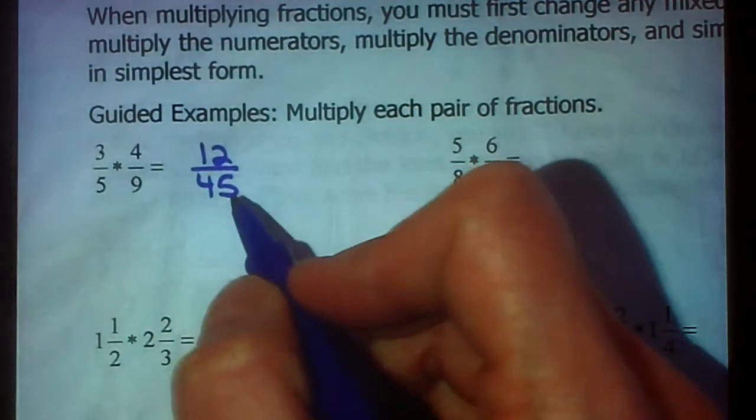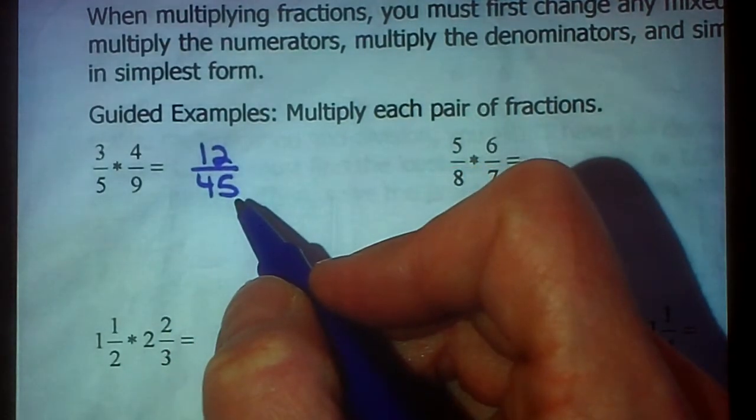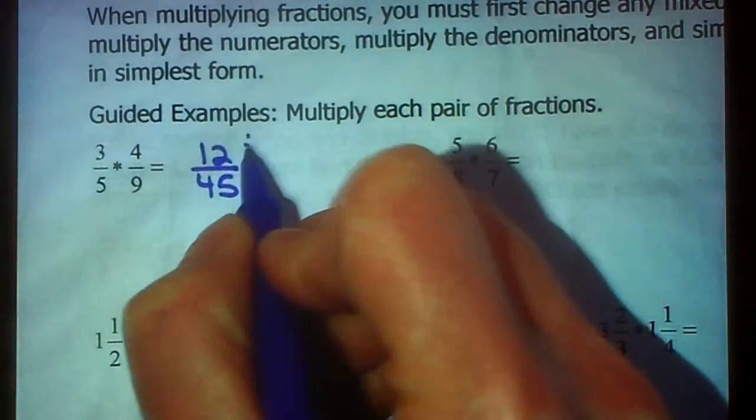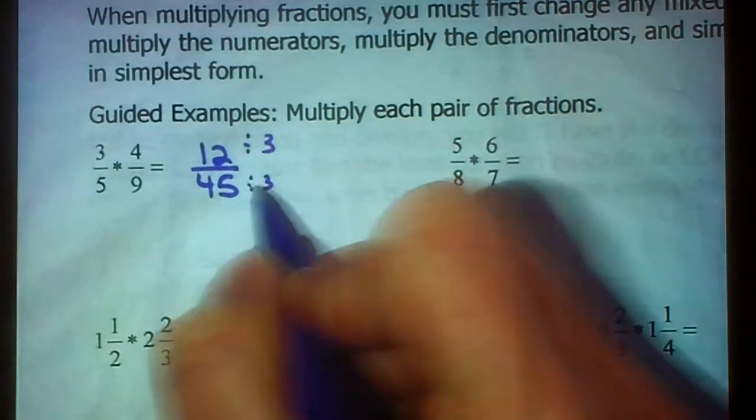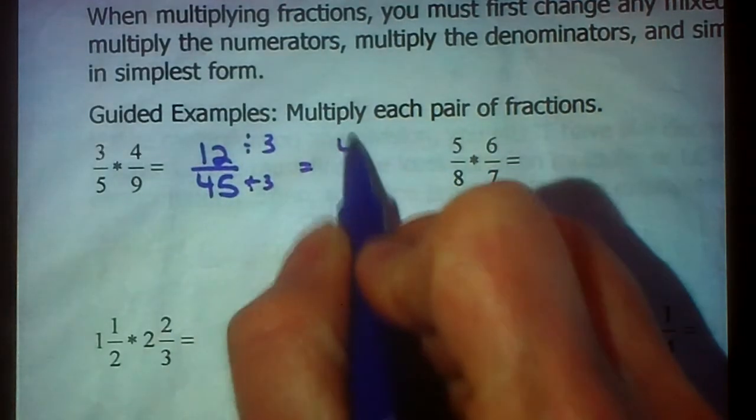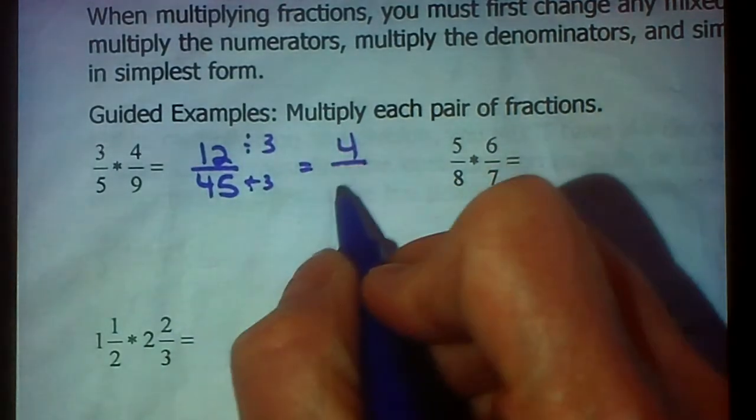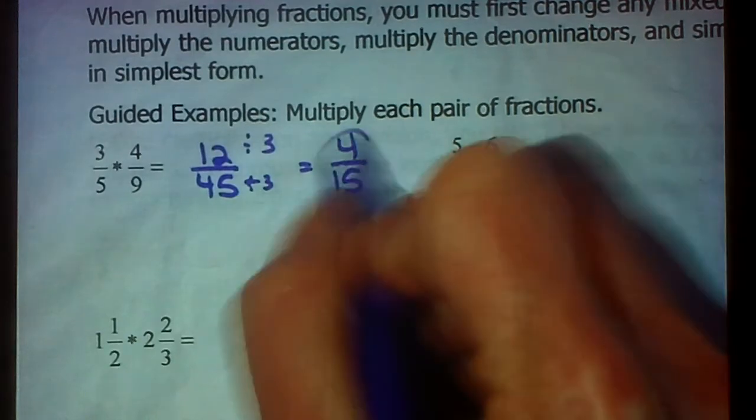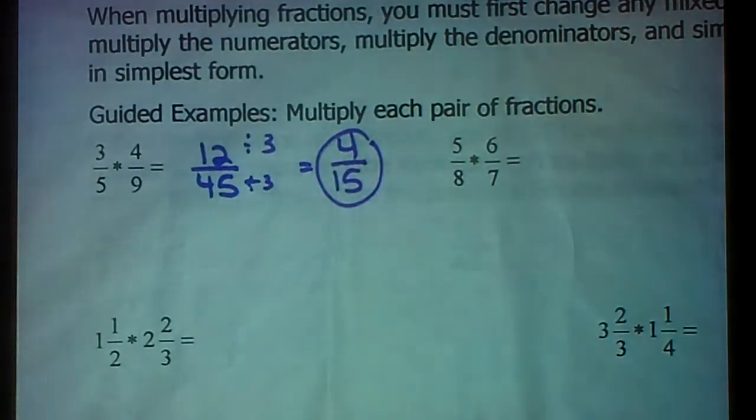So again, remember, Mrs. Sullivan just went over how to simplify a fraction. We now need to divide each of those by 3 to get our final answer. So 12 divided by 3 is 4. 45 divided by 3 is 15. So 4 fifteenths is the answer. Moving on to example 2.